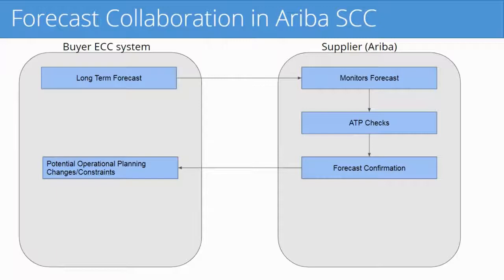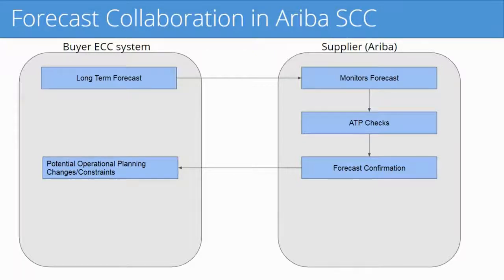Suppliers will typically use this forecast to load their MRP system or to do an available-to-promise check. If they are doing an ATP check, they can come back to you with a commitment or a confirmation. You can then take that confirmation and import it into your ECC system or IBP system, and you can actually constrain your forecast based on the supplier's commitments if you want.